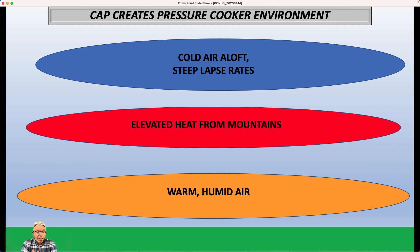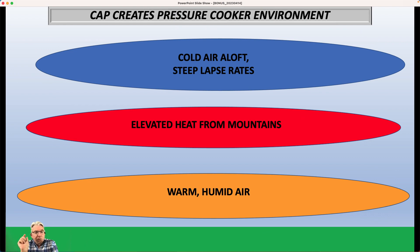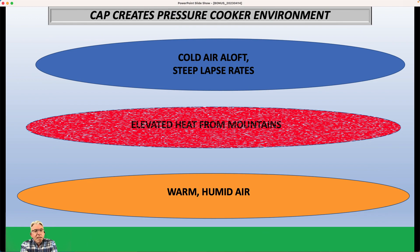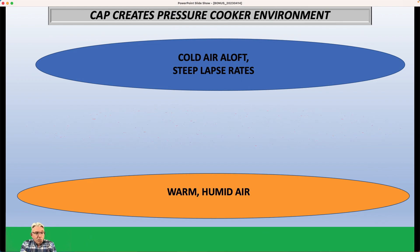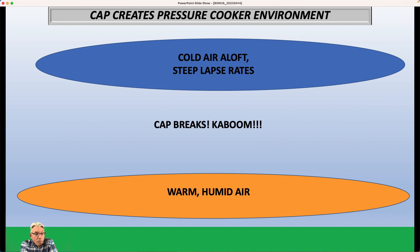Above that elevated mixed layer, the air is still very, very cold. Because it's warmer than it normally would be at around 8,000 or 10,000 feet, the lapse rate in temperature from this layer up to the next is really, really steep. When you have steep lapse rates, if the air can get through that cap, it's just going to explode — it's going to be very, very buoyant. It's going to be much less dense than the environment it's in, and the air is just going to shoot up like crazy.